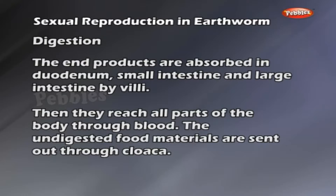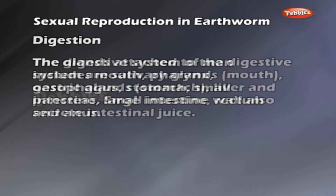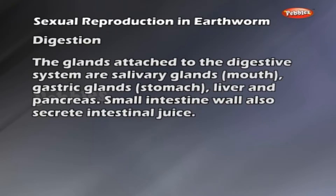Digestive system of man: The digestive system of man includes the mouth, pharynx, esophagus, stomach, small intestine, large intestine, rectum and anus. The glands attached to the digestive system are salivary glands in the mouth, gastric glands in the stomach, and the liver and pancreas. The small intestine wall also secretes intestinal juice.